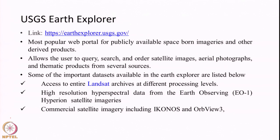USGS Earth Explorer is one of the most popular web portals for searching and downloading publicly available spaceborne and derived products. It allows us to query the server, search for data, and view look images — especially for imaging sensors — before downloading. We can specify search criteria such as location, date range, and cloud cover fraction. Not only satellite images but also thematic products such as land use/land cover maps and elevation information are available.